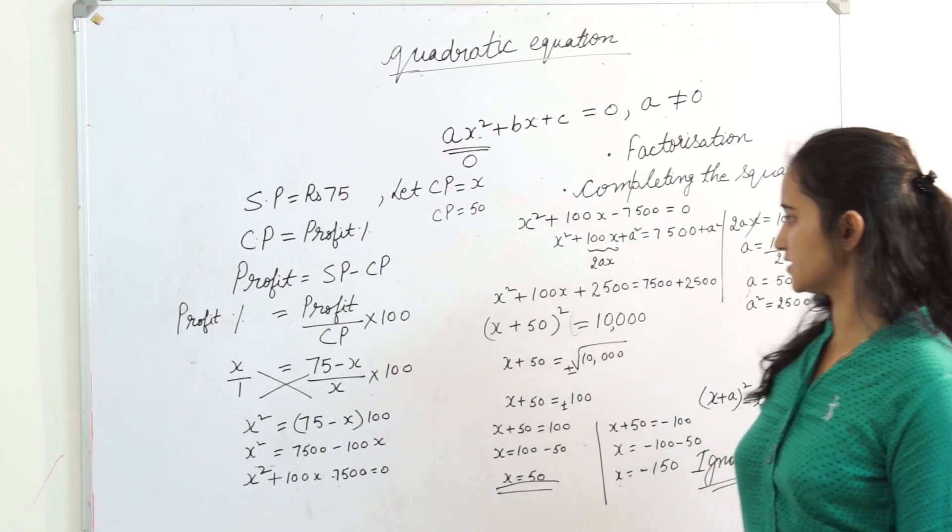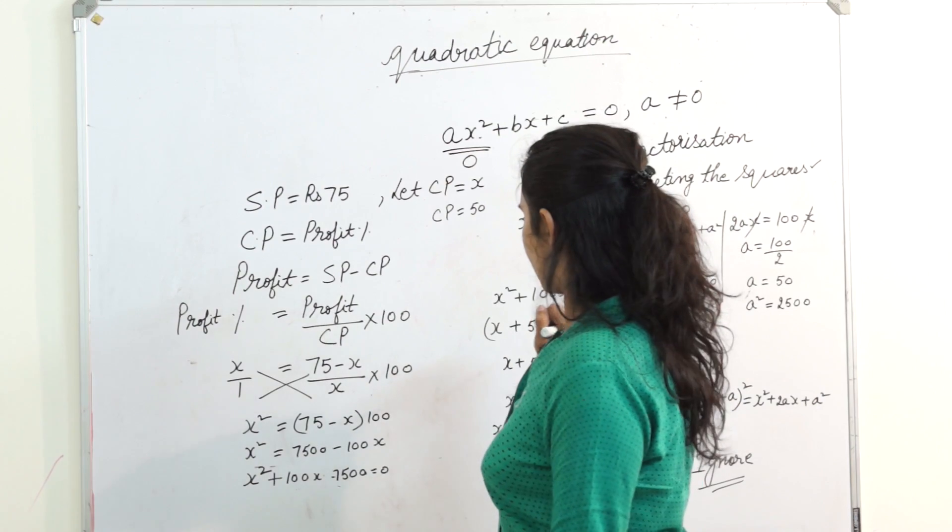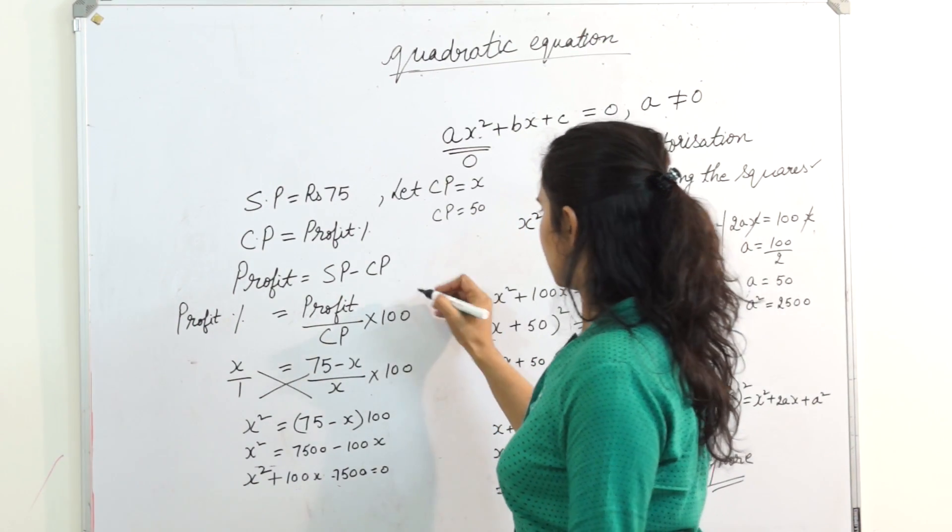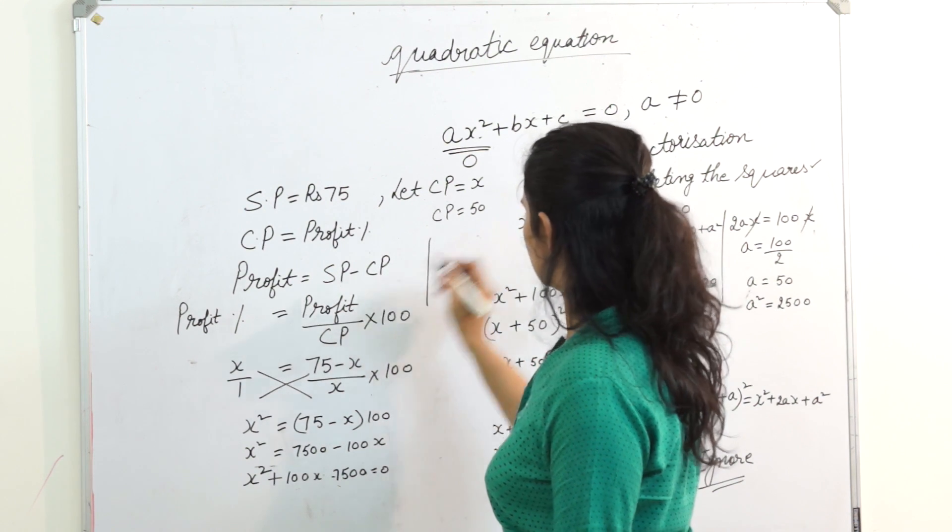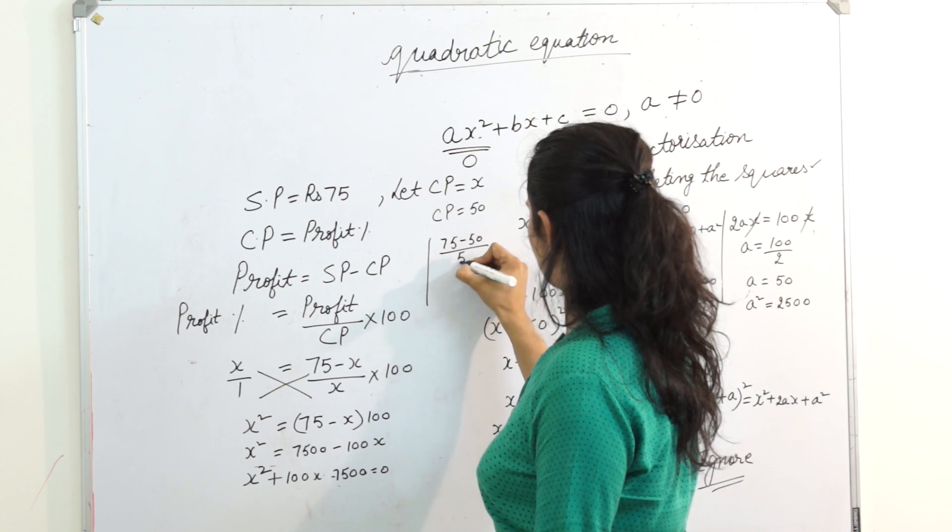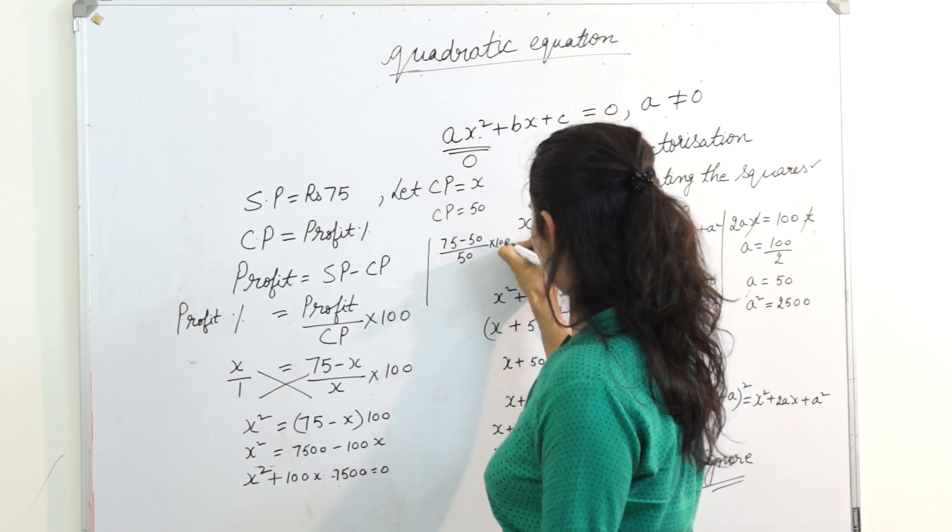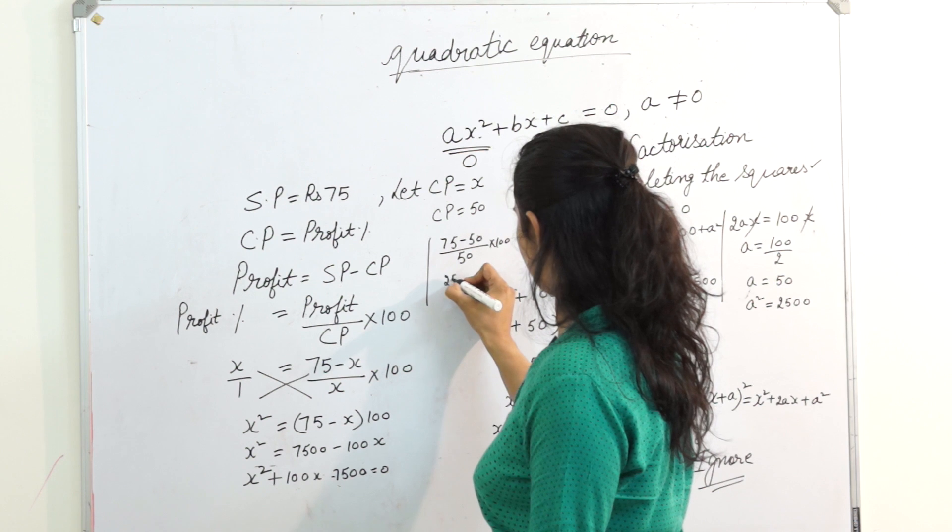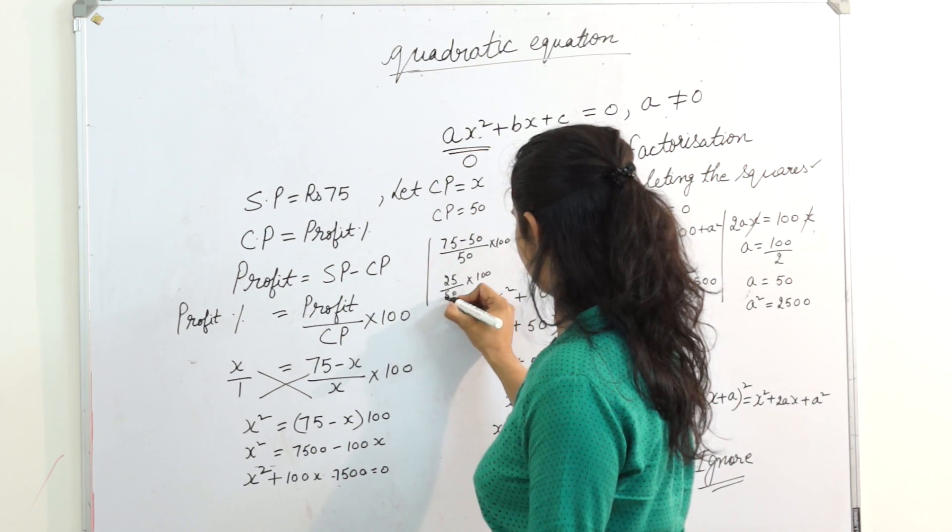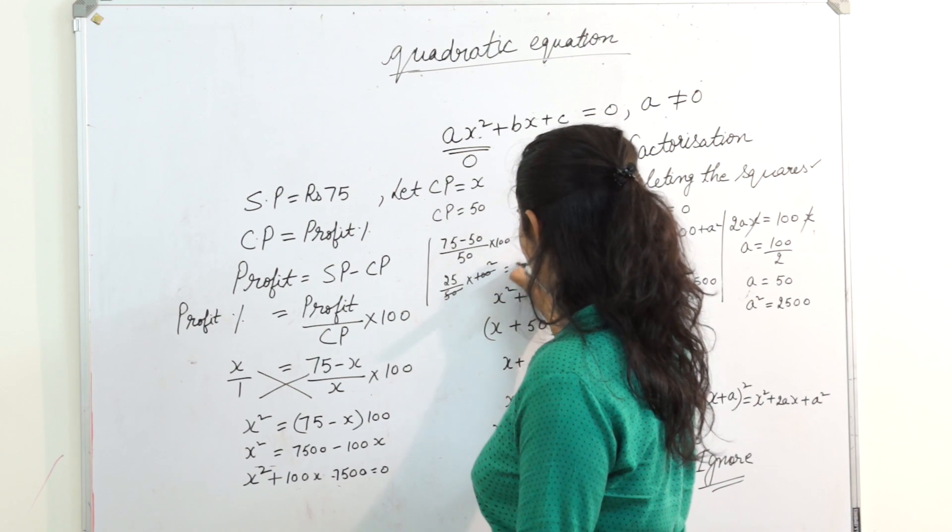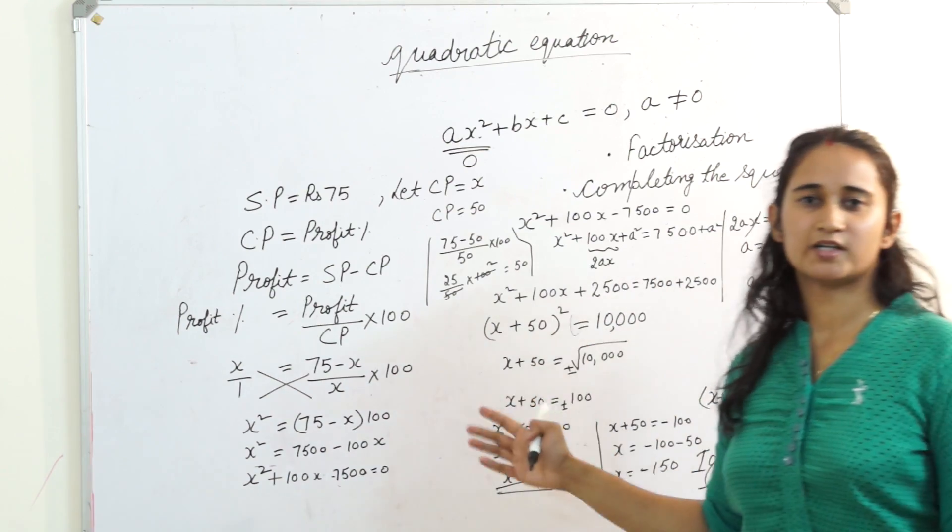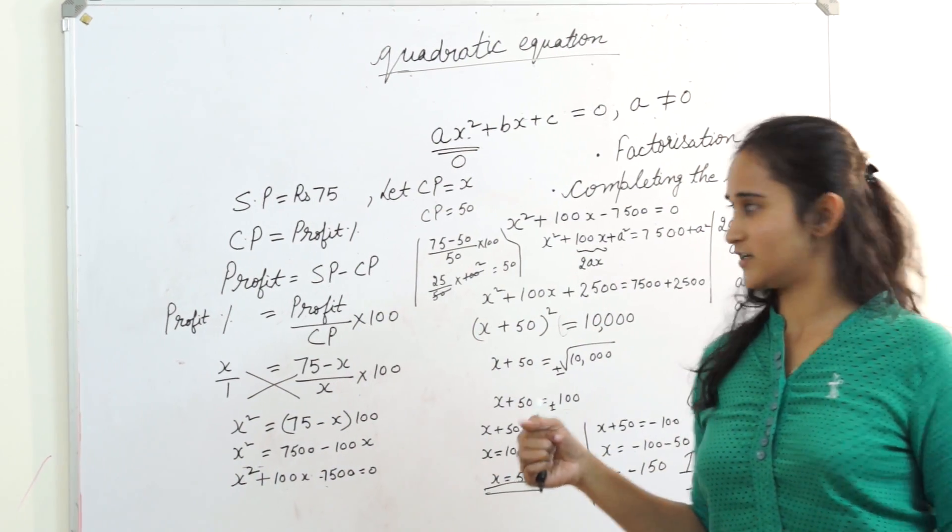You want to verify it? Yes. If I substitute here in profit percentage, 75 minus 50 upon 50 into 100, I got 25 by 50 into 100. So I got 50. My answer is absolutely correct. I hope you got it.